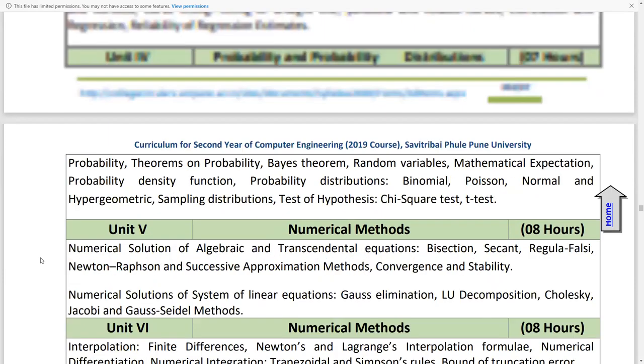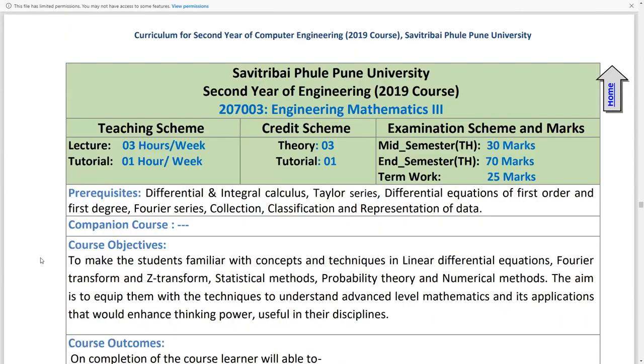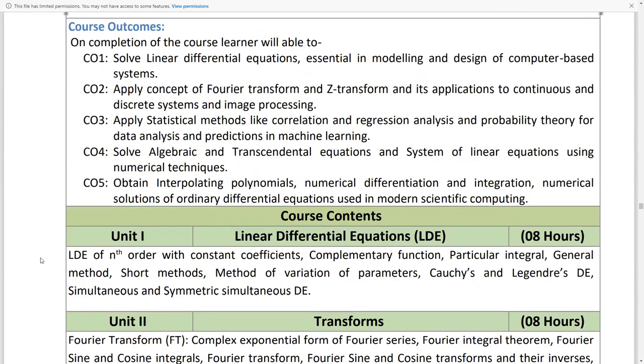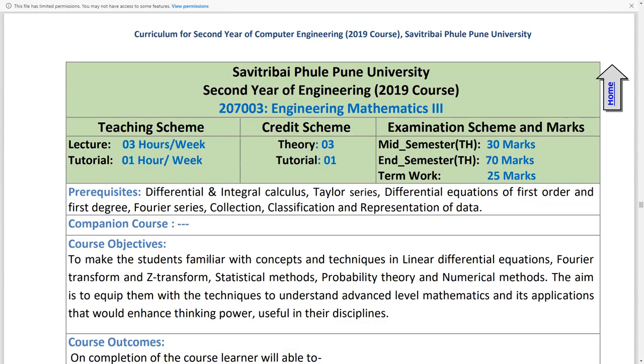Here is the distribution of marks: mid-semester exam 30 marks and end-semester exam 70 marks. There is also the term work of 25 marks.